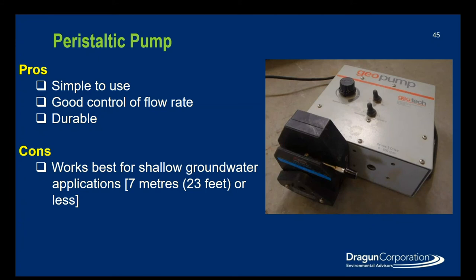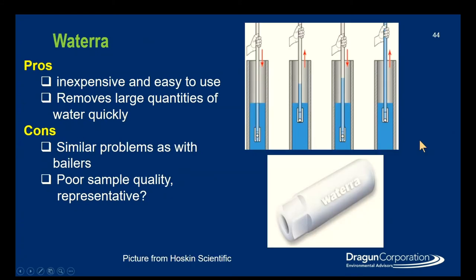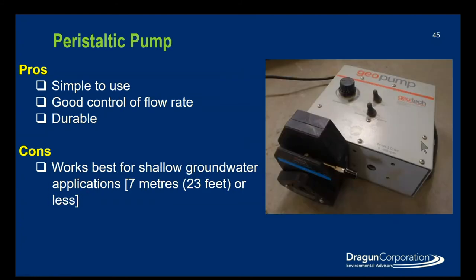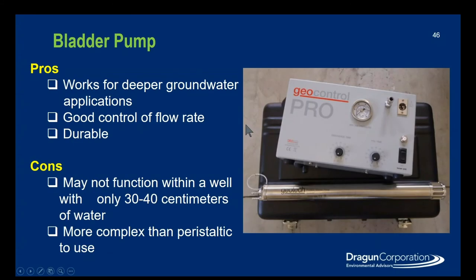For low volume sampling, the peristaltic pump is very simple to use — just a knob and a couple of switches. You can control the flow rate down to about 50 milliliters per minute. They're durable and battery-operated, so you can sample multiple days. The cons are that they're only effective in shallow groundwater applications, up to about seven meters or 23 feet — anything deeper and the pump will struggle to get water to the surface. The other low flow method is the bladder pump, typically used for deeper groundwater applications. You can precisely control the flow rate, and they're durable. However, they may not function within a well with only 30 to 40 centimeters of water, and they're more complex and finicky than the peristaltic pump.